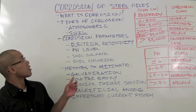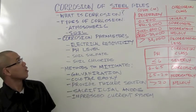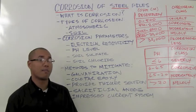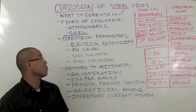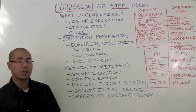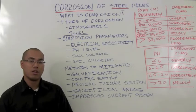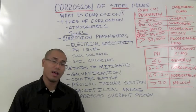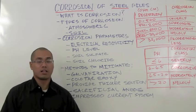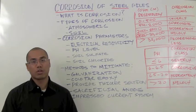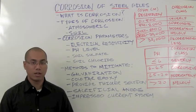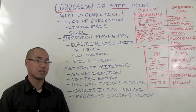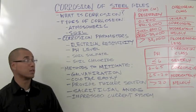Today we'll be discussing corrosion of steel piles on ground mounted PV systems. So what is corrosion? Corrosion is typically defined as a gradual destruction of materials due to a chemical reaction with its environment.